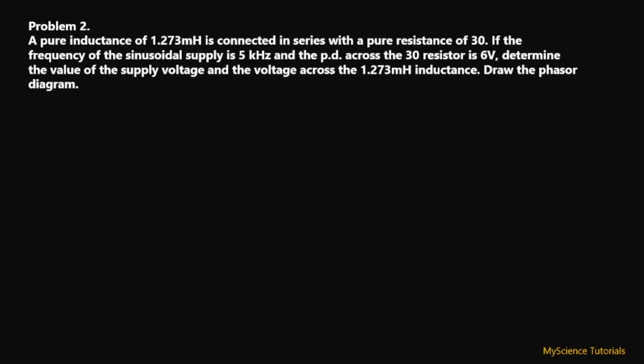Let's have a look at another problem. A pure inductance of 1.273 millihenry is connected in series to a pure resistance of 30 ohms. The frequency of the sinusoidal supply is 5 kilohertz and the potential difference across the 30 ohm resistor is 6 volts. We are to determine the supply voltage, the voltage across the inductance, and draw the phasor diagram.